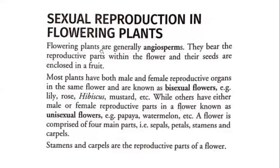First of all, sexual reproduction in flowering plants. Flowering plants are generally angiosperms. We have learned about angiosperms in Standard 9 in your favorite chapter — biodiversity. Angiosperms are flowering plants. They have flowers, seeds, and fruits. They bear the reproductive part within the flower. Their seeds are enclosed in a fruit, and we eat all the fruits — you know seeds are hidden in it.